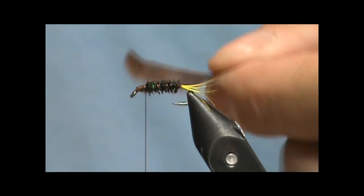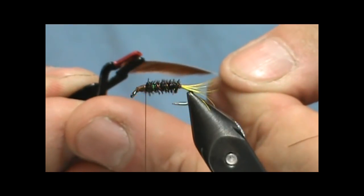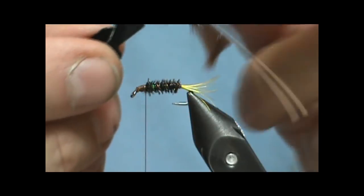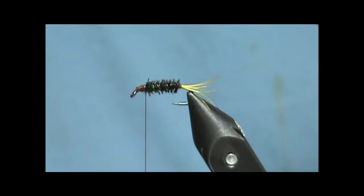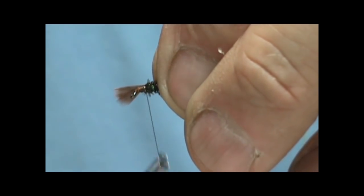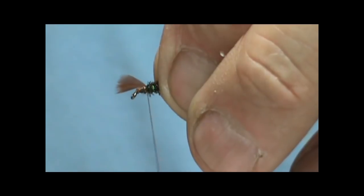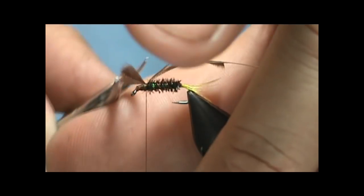Now I'm going to take my hackle pliers. I'm going to clip onto the front and I'm going to pull all of that hackle towards the rear. I'm going to tie that on by the tip. Trim off the excess.